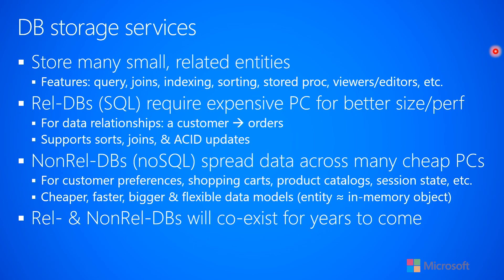I have much more to say about transactions and ACID semantics coming up a little bit later on. The other big kind of database gaining lots of excitement today is non-relational databases, otherwise known as NoSQL stores. In these databases, the data is spread across many cheap or inexpensive PCs — a very different hardware topology. These are really great for things that don't have relationships with one another, like storing a customer's preferences, what's currently in their shopping cart, or product catalog information.